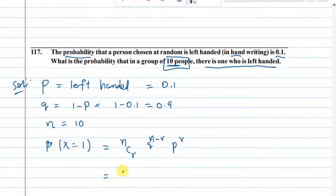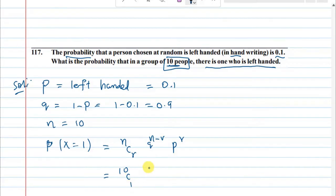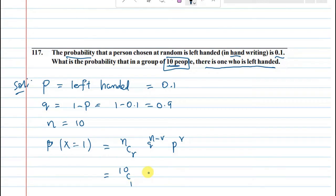If we have 10 members in a group of people, and 1 member selected is the left-handed person, that is p power 1.